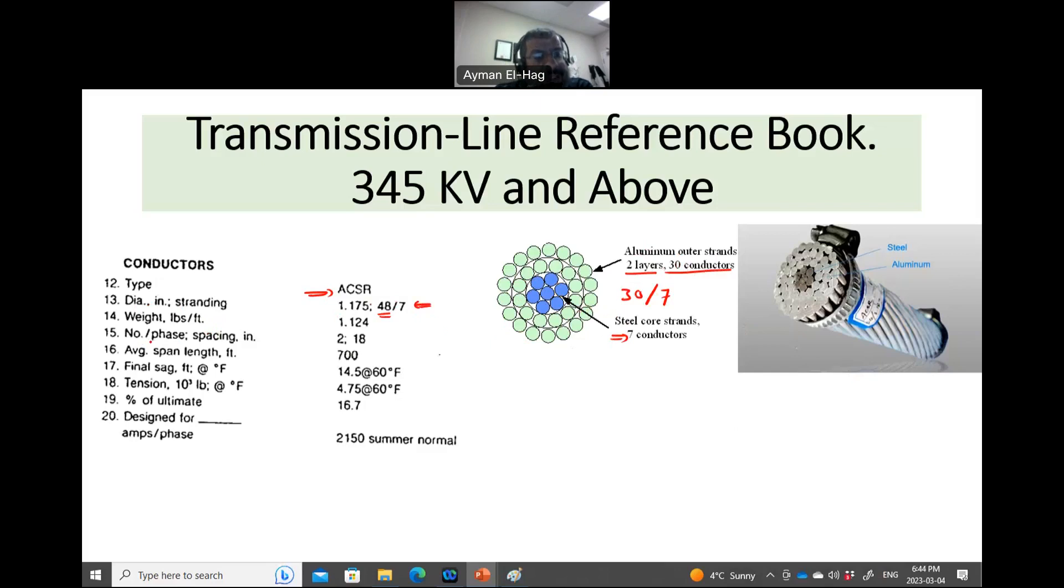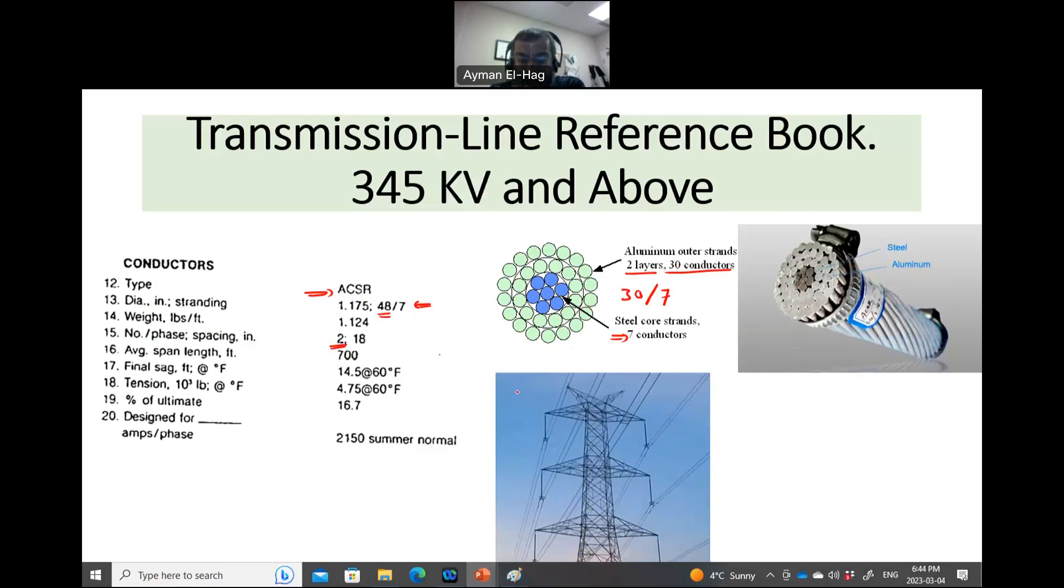Here it is number of phase, number of conductor per phase. It says here it's 2. And this is something very important. It means that this is a bundle of two. So if you look here, for example, to this tower we have here, you can see that per phase, there are two conductors. So this we call it bundle of two. So here each phase will have two conductors, spacing in inches, 18. This is the distance between these two conductors, between this conductor and this conductor. Basically, it is 18 inches. And this distance is very important in calculating the inductance and the capacitance of the line.